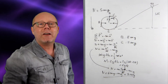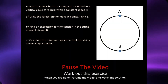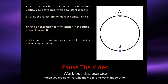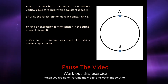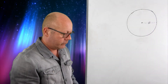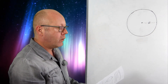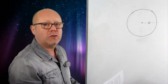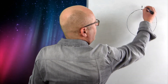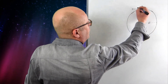Are you ready for the second exercise? Here we go. Let's look at the solution. A mass m is attached to a string and is swirled in a vertical circle of radius r with a constant speed v. There are two points on the circle, A and B. If I place my mass at point A, I can see the forces acting on it.